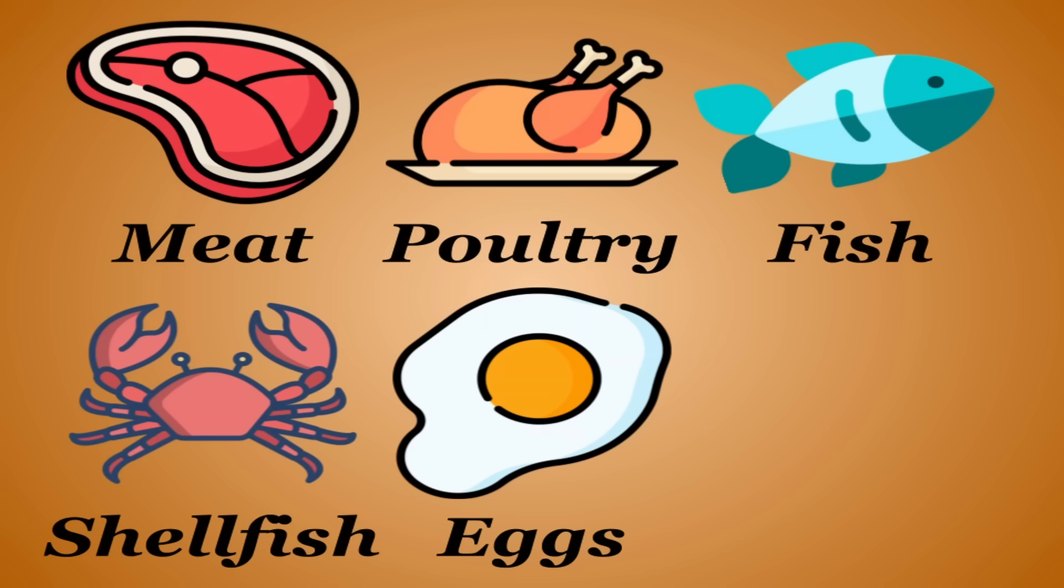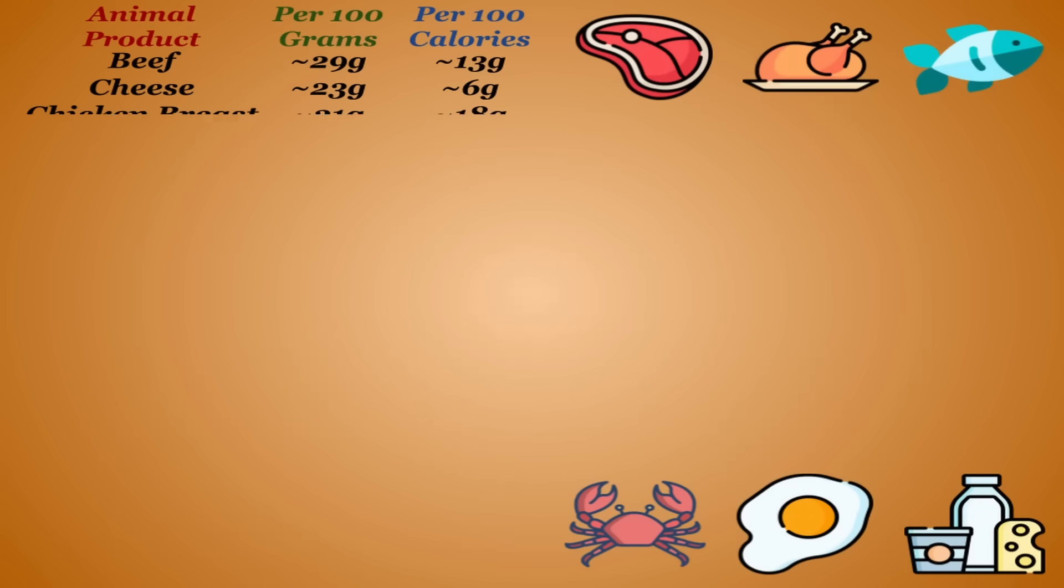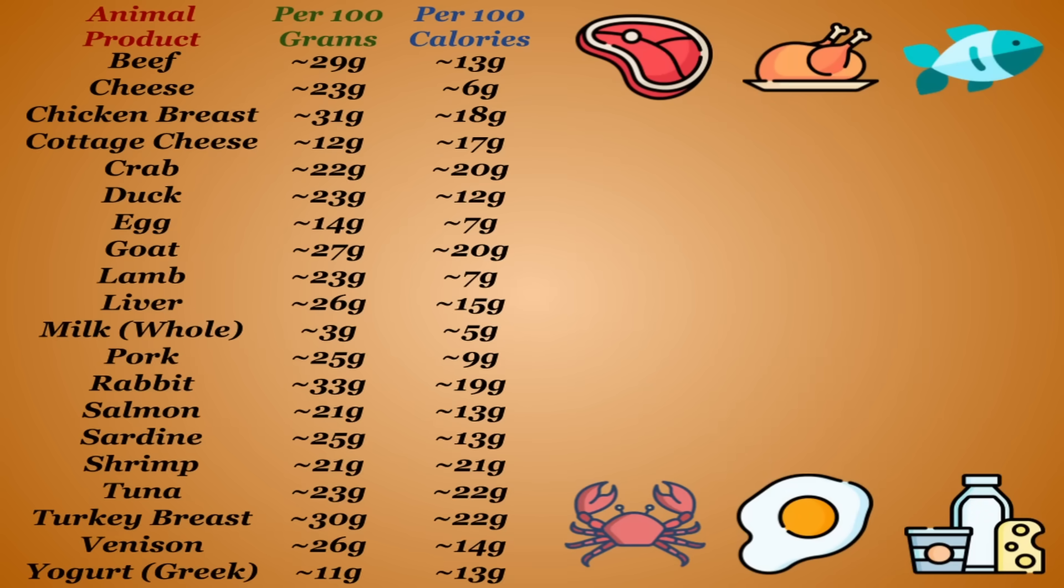When I say animal products, we're referring to meats, poultry, fish, shellfish, eggs, dairy, and anything else that can be considered an animal. Obviously, different animal products provide different protein quantities and some variation in amino acid profiles, but animal products as a whole are considered the highest quality protein sources.